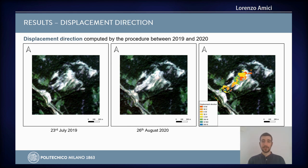The other output is the displacement direction map, which describes the angle — or in other words the cardinal direction — of the movement for each pixel. As you can see in the example, the images are the same as before, and on the right is the displacement direction map.